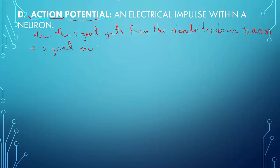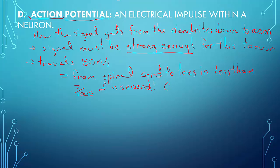And I use the phrase strong enough because part of that is dependent on who you are. Some people it doesn't take a lot to have a reaction, other people it takes an awful lot. So, the signal must be strong enough for this to occur, but it can travel, as I said, 150 meters per second. That's from the spinal cord to your toe in less than seven one-thousandths of a second. That's amazing. In non-fraction terms, seven one-thousandths of a second is seven milliseconds.